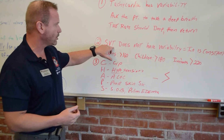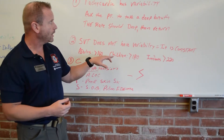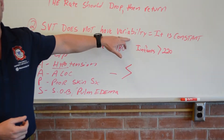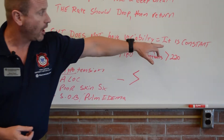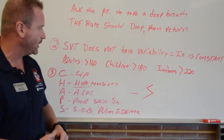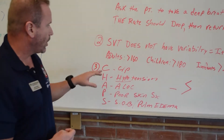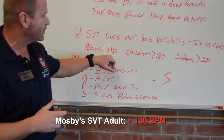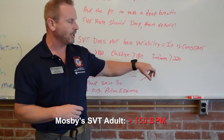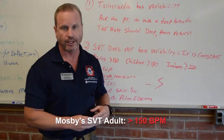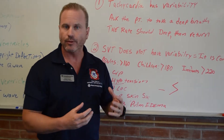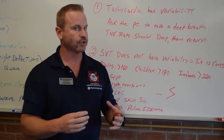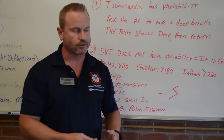SVT, supraventricular tachycardia, does not have the variability that sinus tachycardia does — it is constant. Our normal rates for adults is about over 160, children over 180, infants over 220. When these people are crying, stressed, or you're having them talk, that rate doesn't change.